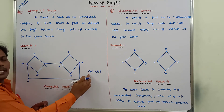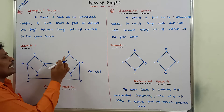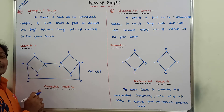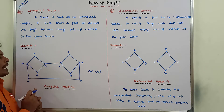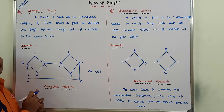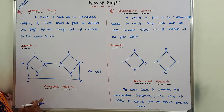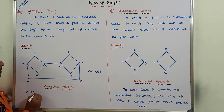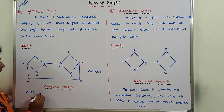This graph G is said to be a connected graph. We can take any pair of vertices from the given graph — that pair of vertices are connected by using a path. Then that type of graph is called a connected graph. For example, we can take the pair of vertices (A, G). A is the source vertex and G is the end vertex. A and G are connected by using a path: A to I, I to J, J to G.